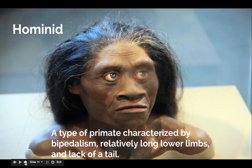This term hominid might be something that's new to most seventh graders. Hominid simply refers to any type of primate that is bipedal — that means it walks upright on two legs. Bi means two and ped means feet or legs. Bipedal hominids have relatively longer lower limbs, so our legs are longer, relatively speaking, than our arms would be, and they lack a tail. Really, it's all humans and human-like ancestors that fall under this term hominid.